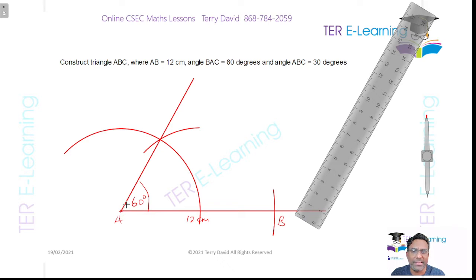Now the next thing that we need to do, we need to construct 30 degrees at the point B, because they said ABC is 30 degrees. So we need to construct a 30 degree on the right-hand side.